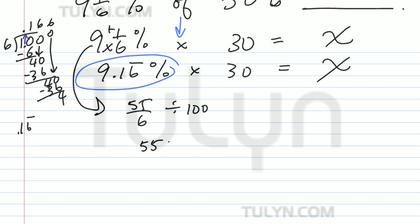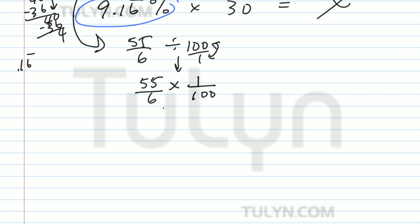So it's going to be 55 over 6 times 1 over 100, so I already found the reciprocal, and this turned into multiplication. So it'll be 55 times 1 over 6 times 100, which is 600. And 55 over 600 times 30.